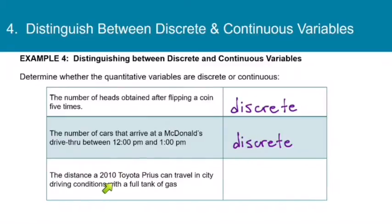And then we have the distance a 2010 Toyota Prius can travel in city driving conditions with a full tank of gas. Distance is not counted. Distance is measured. And so this is going to be continuous. It is definitely possible for a Toyota Prius to drive 20 miles or 25 miles or any number in between, 22.3 miles or 24.721 miles. And we can have any number of decimal places that the odometer will give us. And so we're measuring, not counting, and so this is continuous.